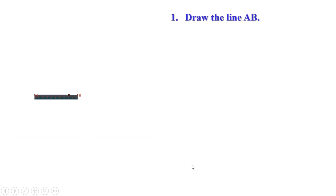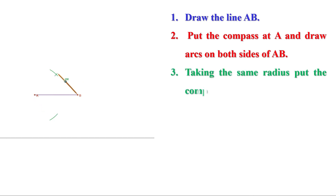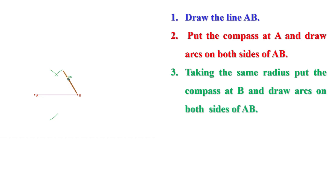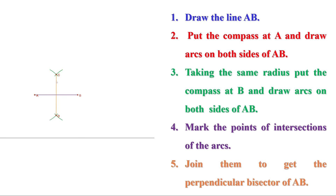Let us recall the steps once again. First step: draw the line AB. Second step: put the compass at point A and draw arcs on both sides of AB. Third step: put the compass at point B without changing the radius and draw arcs on both sides of AB. Fourth step: mark the points of intersection. Fifth step: join the points of intersection to get the perpendicular bisector of AB.